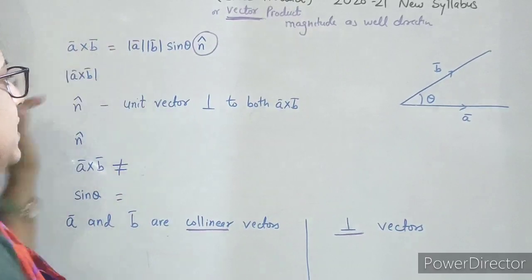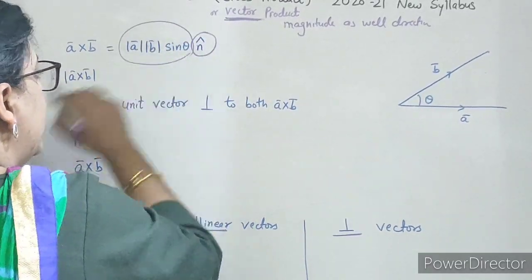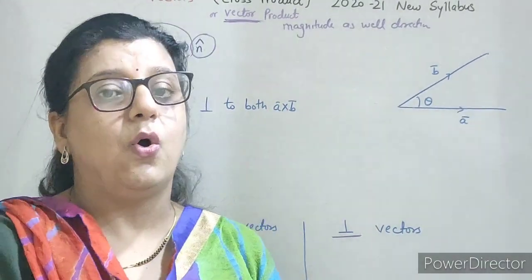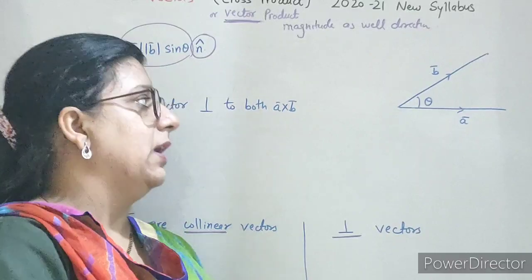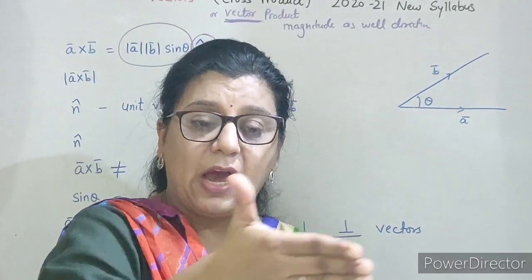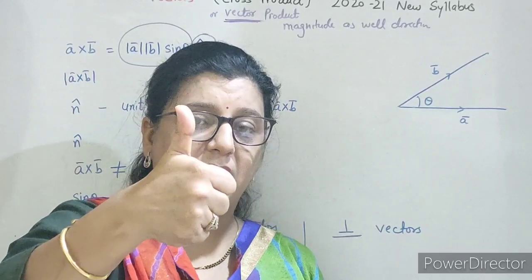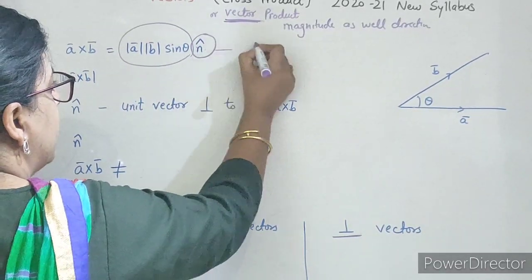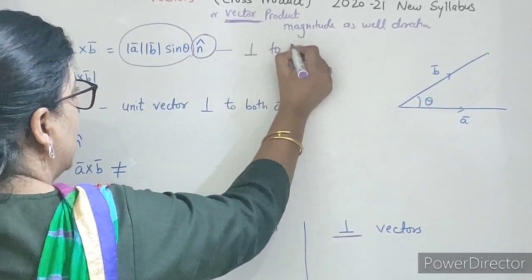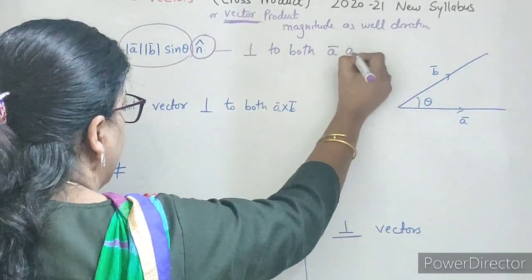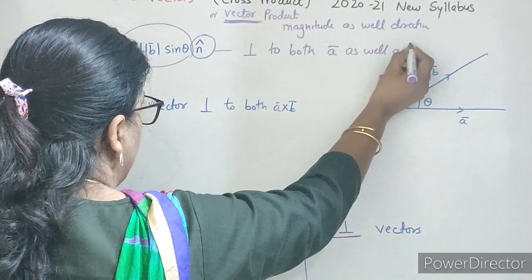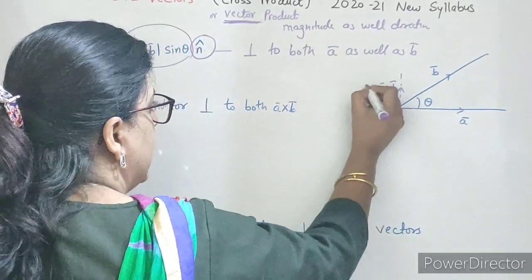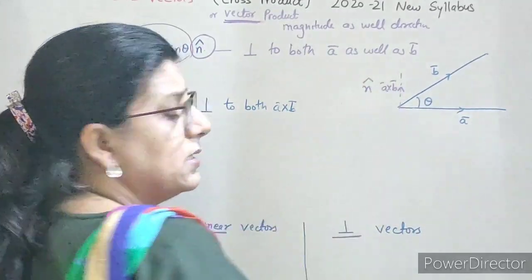Magnitude ke saath saath direction bhi hogi. Mod A, mod B, sin theta — yeh ho jayega magnitude. Aur jo n̂ hai, unit vector hai, yeh represent karta hai direction of A cross B. A ko hum rotate karenge B ki taraf — outward direction. So yeh jo n hai, yeh hoga direction perpendicular to both vector A as well as vector B.